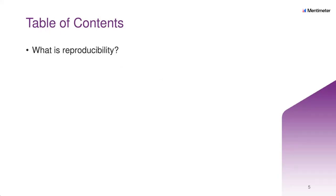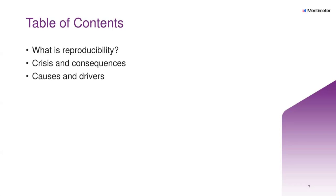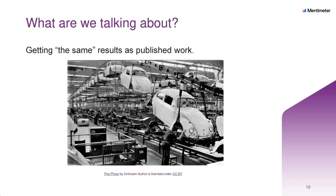Just a quick walk through our table of contents: we're talking about what is reproducibility, followed by a crisis in reproducibility and the consequences of that crisis, some of the causes and drivers, why it matters for you — which should not be a surprise given the title of this session — and finally time at the end for questions and answers. You can interact throughout, and because you can do it through Mentimeter it will be anonymous.